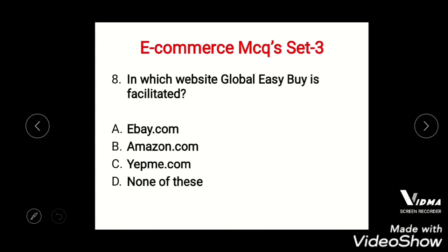Question 8: On which website is global peer-to-peer buying and selling facilitated? Options: A) eBay.com, B) Amazon.com, C) Yepme.com, D) None of these. The right answer is eBay.com.